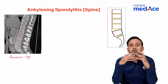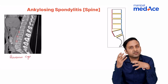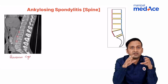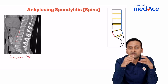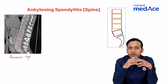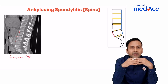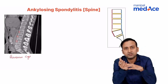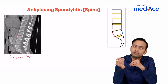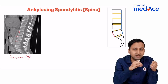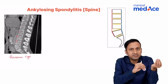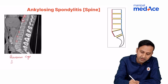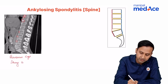Once the inflammatory stage is over, the body tries to repair the erosions by depositing calcium over them. The body senses the erosions and deposits calcium, causing those corners to shine out brighter on imaging. This appearance of sclerosis at the corners is called the shiny corner sign.